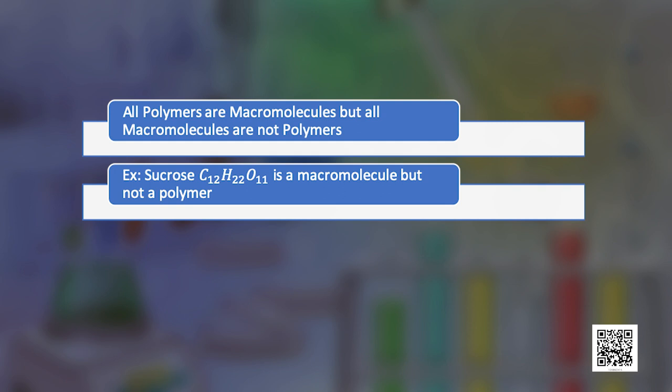For example, sucrose is a macromolecule with formula C₁₂H₂₂O₁₁ — it is not a polymer. At the same time, lipids are also macromolecules and are not polymers, as they are made up of smaller units of different kinds such as glycerol and fatty acids, rather than monomers that repeat themselves. These are two important examples where even if they are macromolecules, these molecules are not polymers.